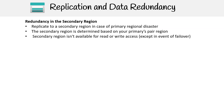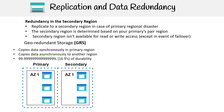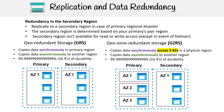For redundancy in the secondary region, data is replicated to a secondary region in case of a primary regional disaster. The secondary region is determined based on your primary's pair region, and is not available for read or write access by default. Geo-redundant storage copies data synchronously in the primary region and asynchronously to another region, offering 99.99999999999999% — 16 nines — durability. Geo-zone redundant storage is similar to GRS but adds synchronous replication across three availability zones in the primary region before asynchronously replicating to another region, maintaining the same 16 nines durability level.